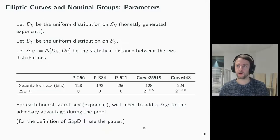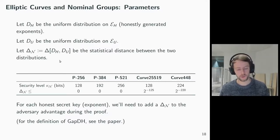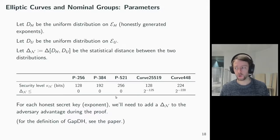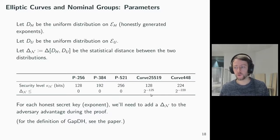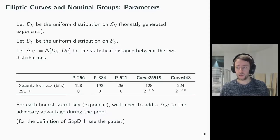Let's look at an interesting parameter of nominal groups. Let dH be the uniform distribution on the honestly generated exponents and dU the uniform distribution on EU. Then delta_N is defined as the statistical distance between these two distributions. If we look at the values delta_N for the five candidate groups, we see that the prime order groups have delta_N equals zero, because there is no difference between these two distributions. However, for curve 25519 and curve 448 there is one, and this will show up in the security bounds, because for each honest secret key we need to add a delta_N to the adversary advantage when we pass from EH to EU to use the gap Diffie-Hellman assumption.